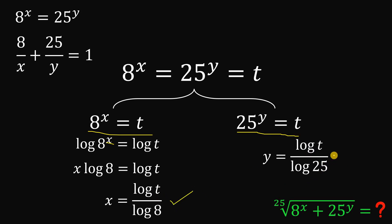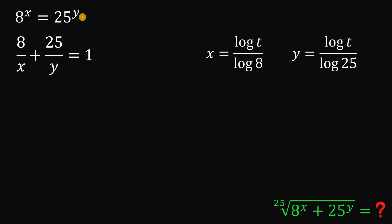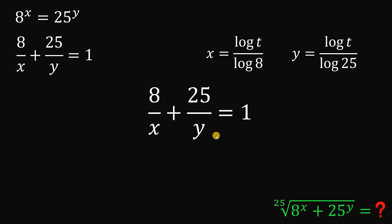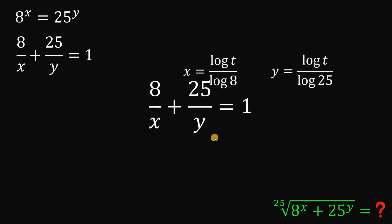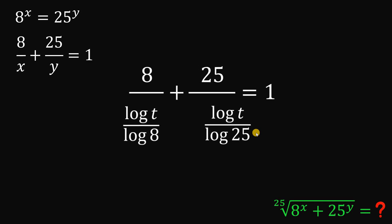Now we will use these two results to answer this question, using the second given: 8 over x plus 25 over y equals 1. We know x and y in terms of t, so we replace x with logarithm of t over logarithm of 8, and y with logarithm of t over logarithm of 25.